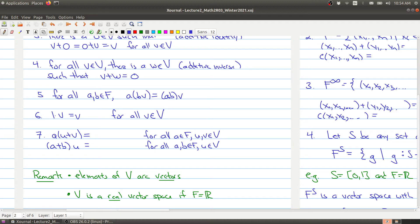A times the sum of two elements U+V is the same as AU plus AV. Or if I decide to first add two scalars and multiply it by an element U, it's the same thing as doing AU plus BU. Axiom seven here is telling me how these two operations interact with each other—addition and scalar multiplication.